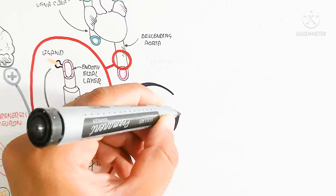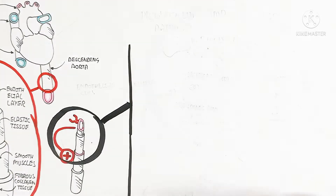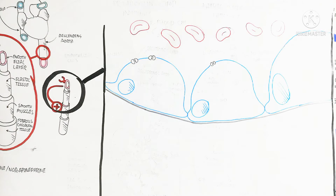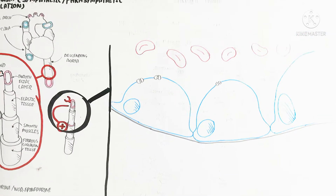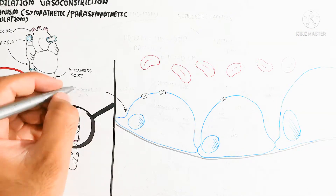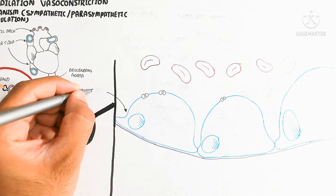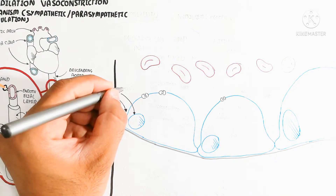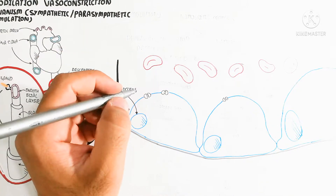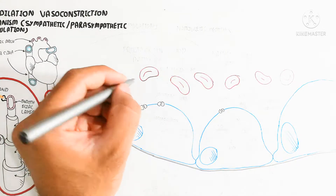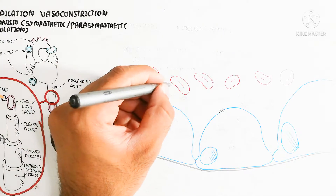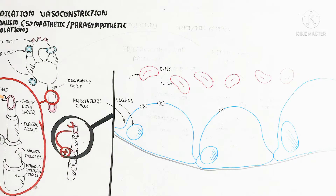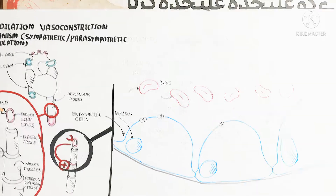Let's draw the endothelial layer and smooth muscle cells again. The endothelial cell is in direct contact with the blood. Glucose can enter without insulin, so the endothelial cell is independent of insulin for its metabolism and glucose influx. This shows the RBC moving into the endothelial cell.